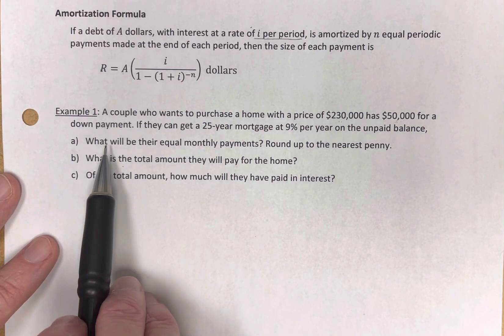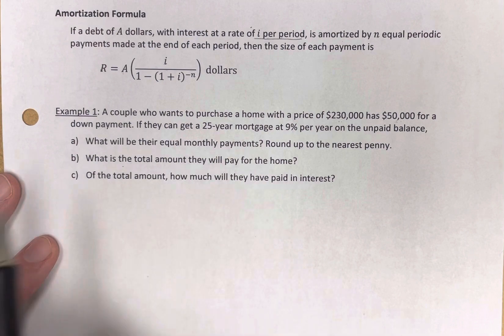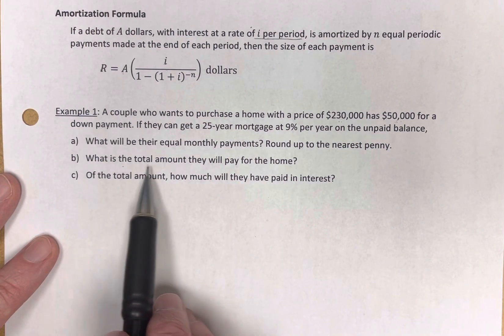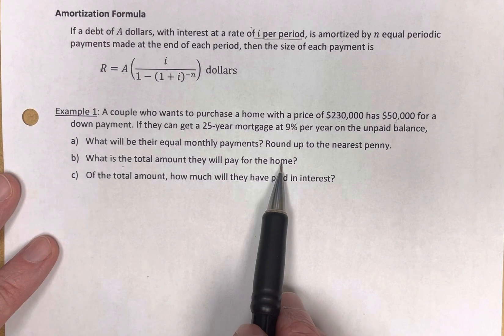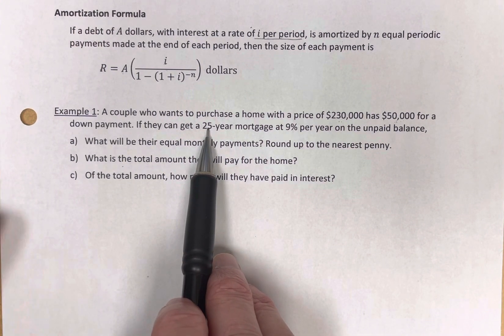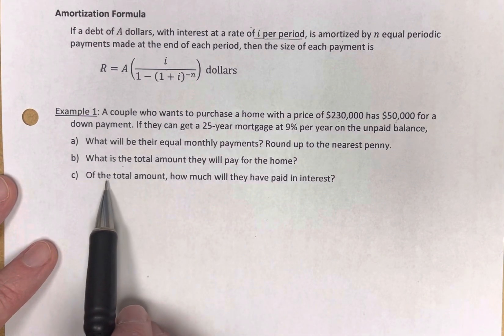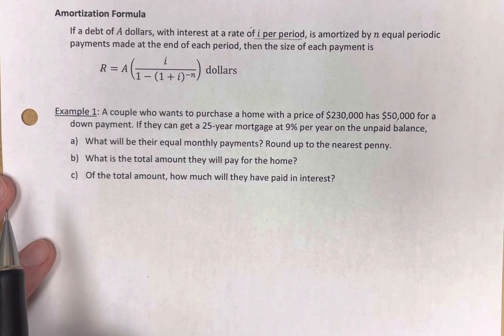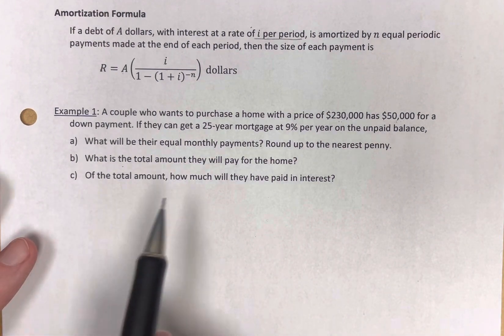They've got a 25-year mortgage at 9% per year. And we want to know: what are their equal monthly payments? We're going to round that up to the nearest penny. What is the total amount they will wind up paying for the home when all is done, when they've made their final payment 25 years later? And of this total amount, how much will they have paid in interest? I think you're going to be very surprised by that.